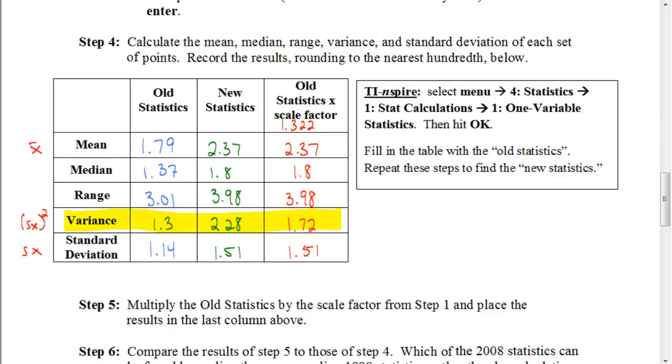These are the numbers you should have gotten in your table. Again, what you should have done in this last column is taking the old statistics, the 1.79 times 1.322, and you get approximately these values. And if you notice, these values are all the same as our new statistics were. However, the only thing that was different was the variance.